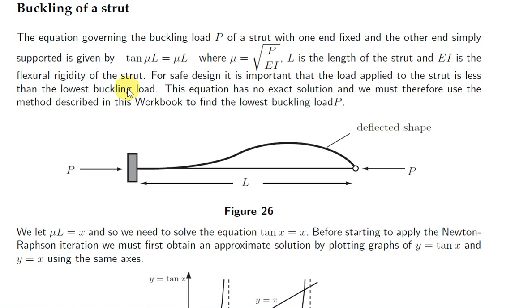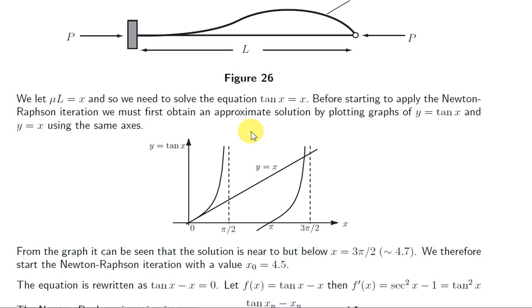So for safe design, it is important that the load applied to the strut is less than the lowest buckling load. We see that our equation tan mu L equals mu L has the form tan of x equals x, so we are going to solve this equation for x. Let's first consider an approximate solution.